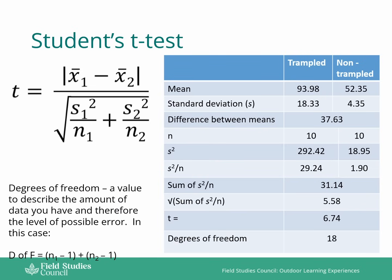The degrees of freedom is a value to describe the amount of data you have and therefore the amount of possible error that could come into our equation. In this case, for student t-test, the degrees of freedom is n₁ minus 1 plus n₂ minus 1. So we had n₁ is 10 and n₂ is 10, so we're realistically looking at 9 plus 9, which gives us a degrees of freedom of 18.